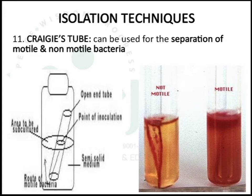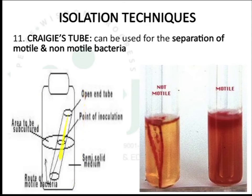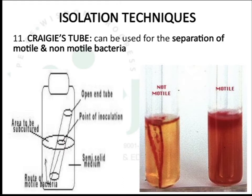The Craigie tube consists of a wide tube and a narrow tube, with both ends of the narrow tube open. Semi-solid media is placed in the wide tube and the narrow tube is kept inside it. The inoculum containing motile and non-motile bacteria is inoculated at the point of inoculation in the narrow tube. After incubation, the motile microorganisms travel along the narrow tube and reach the wider tube, while non-motile microorganisms remain in the narrow tube.